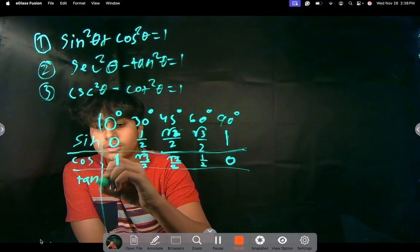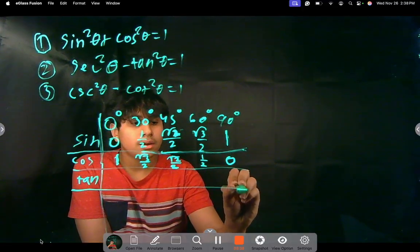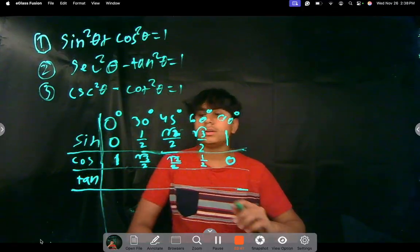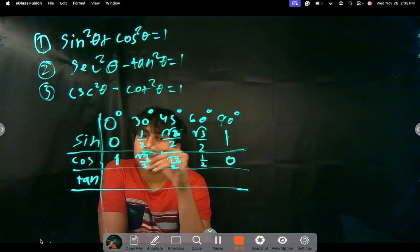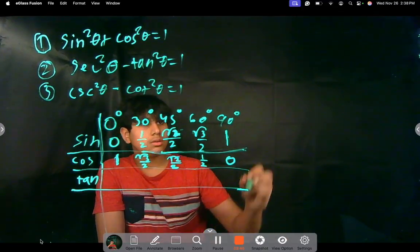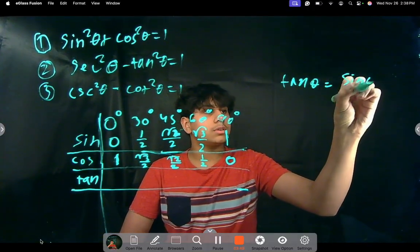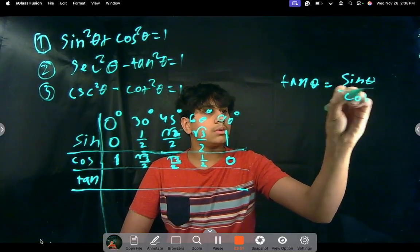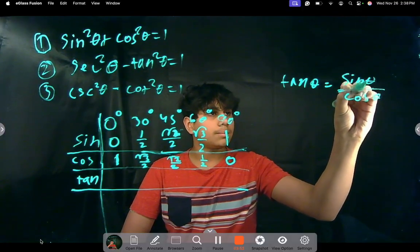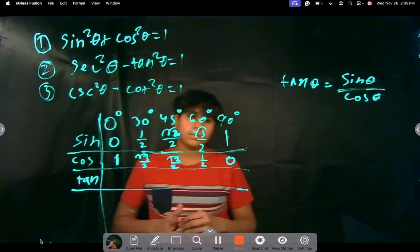And now we can write it for tangent. So then, for tangent, what is it going to be? It's just going to be sine over cosine, because tangent theta is equal to sine theta over cosine theta. It's a theorem that we learned in previous videos.